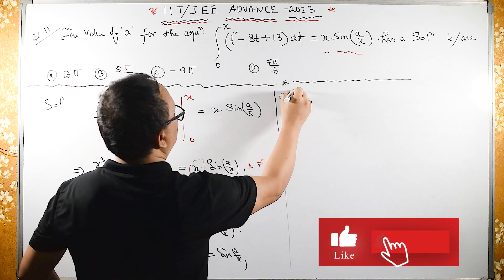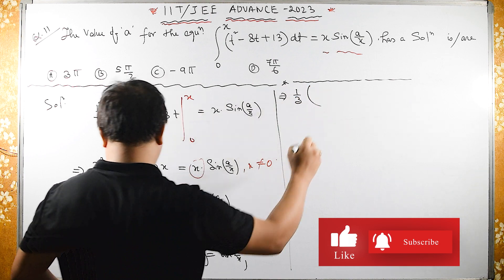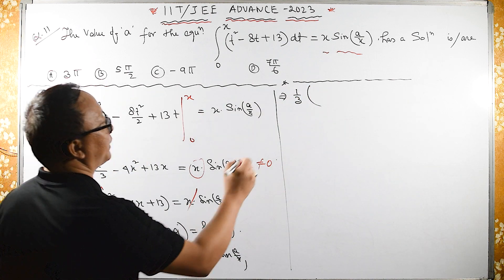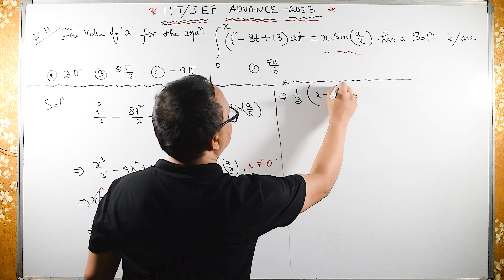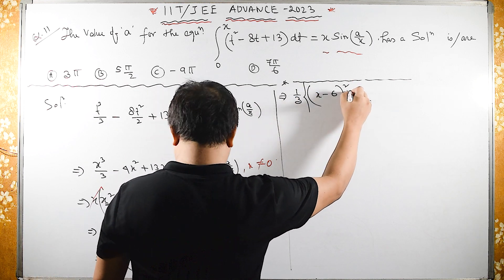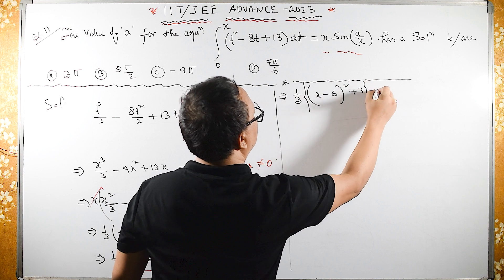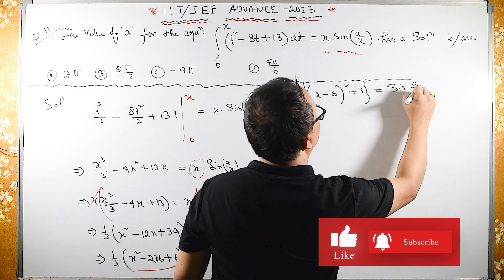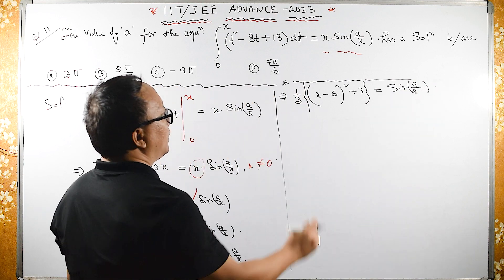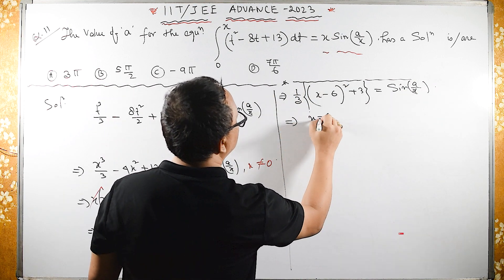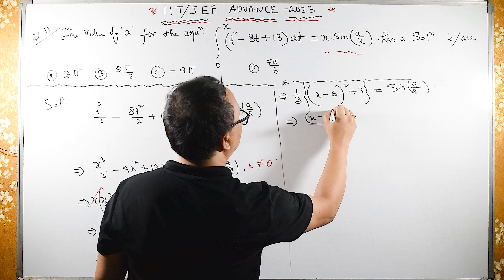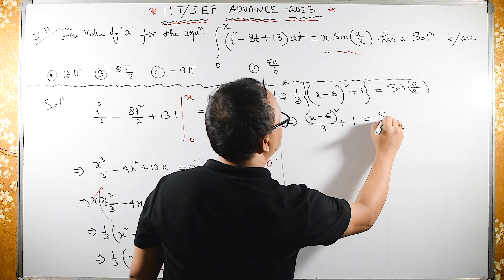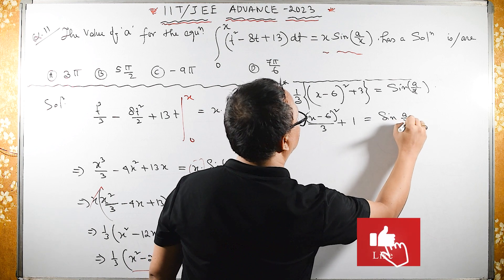So this implies 1/3·(X - 6)² + 3 equals sin(A/X). Let us put this 1/3 inside: (X - 6)²/3 + 1 equals sin(A/X).